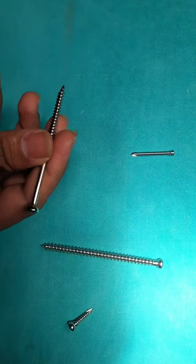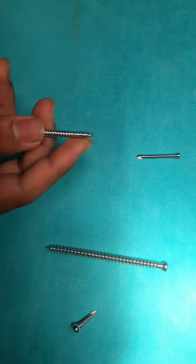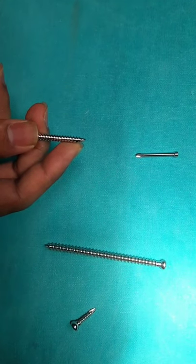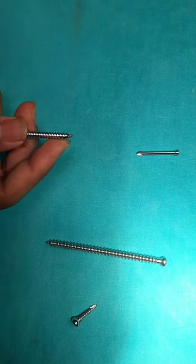Malleolar screws are a type of trocar screw. The trocar tip is suited for the soft cancellous bone of the distal tibia. Syndesmotic pins and locking bolts used in intramedullary nails are types of trocar tip.